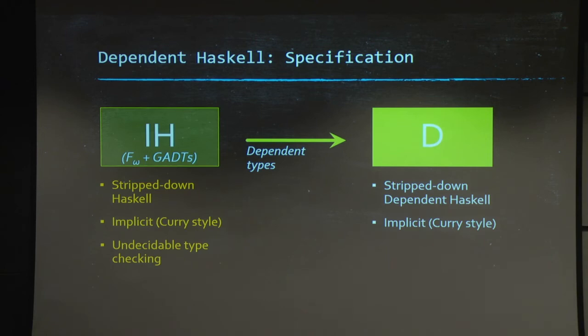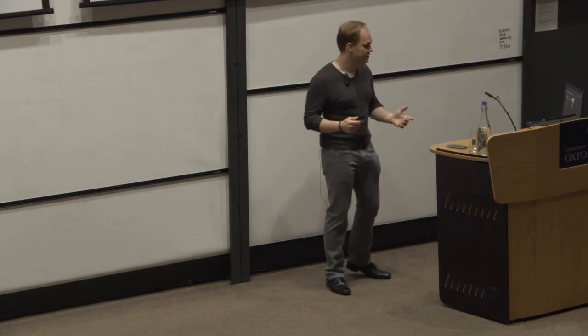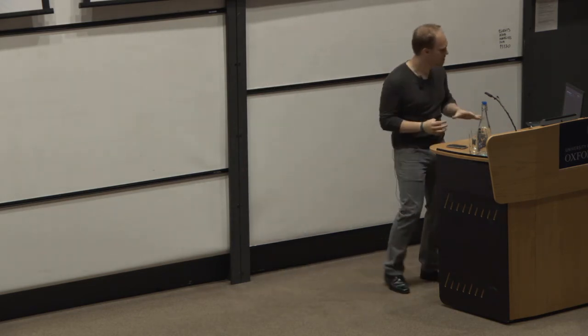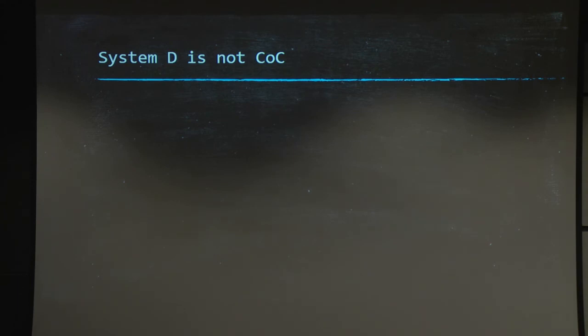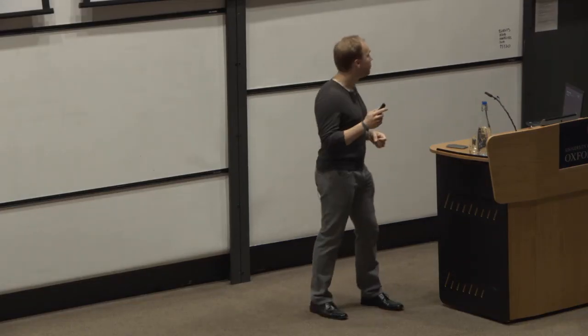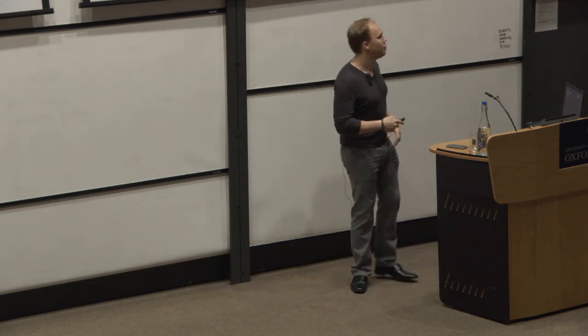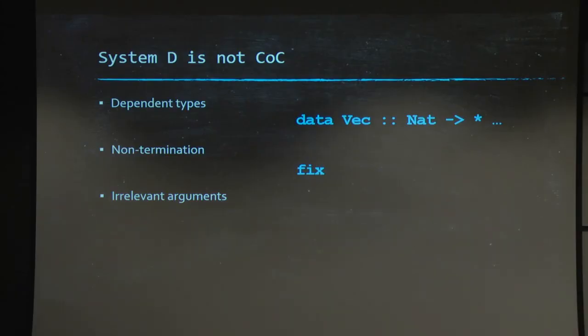Who would have thought? Well, let's just go briefly over system D to see how it might differ from other languages you may know. So it's an unusual combination of features. Somewhat unusual, sorry. It has dependent types, as we've seen. It has non-termination. But it also has irrelevant arguments. This is useful, for instance, for polymorphism. And it has coercion abstraction. That is, you can abstract over a given type equality directly in the language.